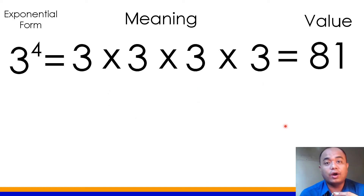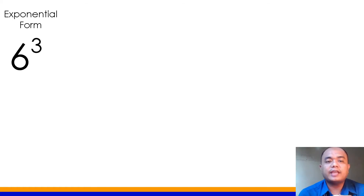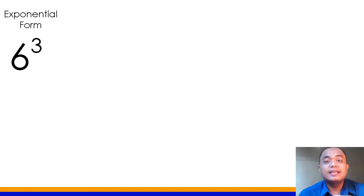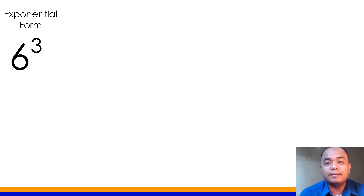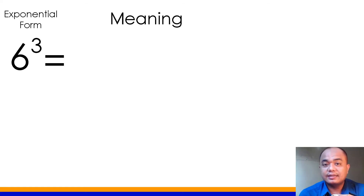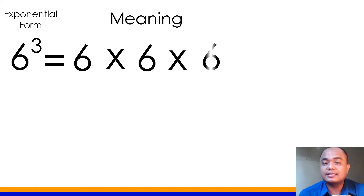And that's how we get the value of exponential notation. Let's have another example. The exponential form is 6 cubed. So what does this mean? The 6 is used as a factor and is multiplied 3 times. So we can say that 6 times 6 times 6 is still equal to 6 cubed.